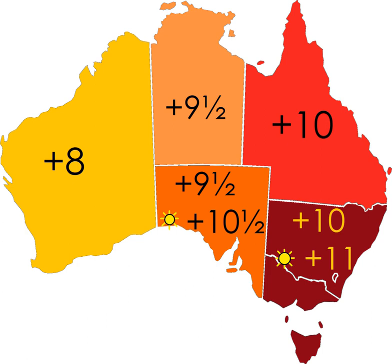Australia uses three main time zones: Australian Western Standard Time, Australian Central Standard Time, and Australian Eastern Standard Time. Time is regulated by the individual state governments, some of which observe daylight saving time. Australia's external territories observe different time zones.